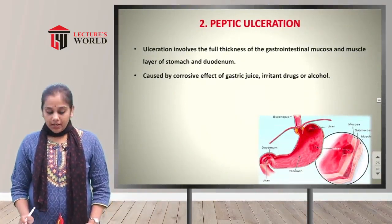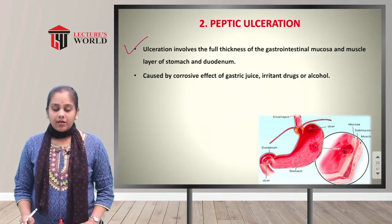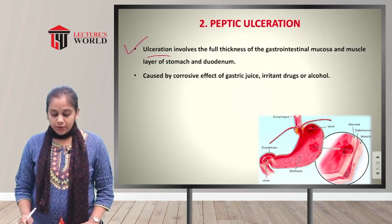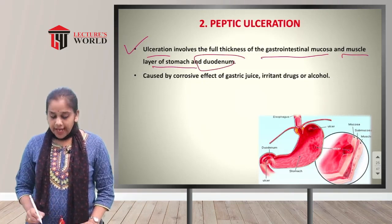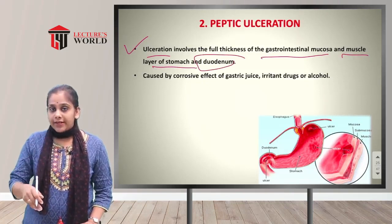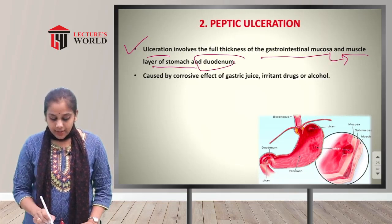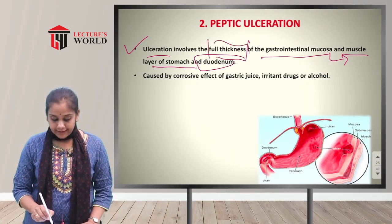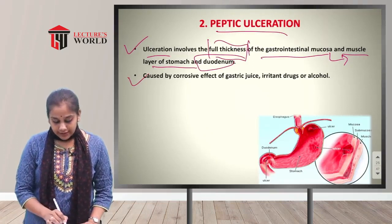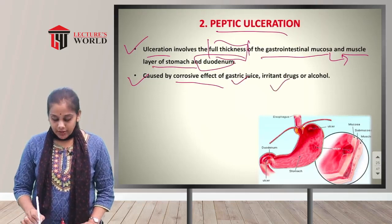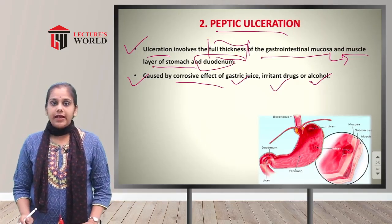The second condition is peptic ulceration — ulceration involving the full thickness of the gastrointestinal mucosa and muscle layer of the stomach and duodenum. The ulceration goes deep into the mucosa and muscle layer. Causative factors include the corrosive effect of gastric juice, drugs, and alcohol — heavy alcohol consumption and drug use cause ulcers in the gastric mucosa.